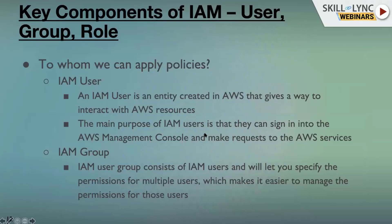Now that we have a high-level understanding of policies, we get into the next key components: users, roles, and groups. An IAM user is an end user — a single user, usually identified by email addresses in the cloud space. IAM users come into picture once you log into the management console or authenticate into the AWS account.